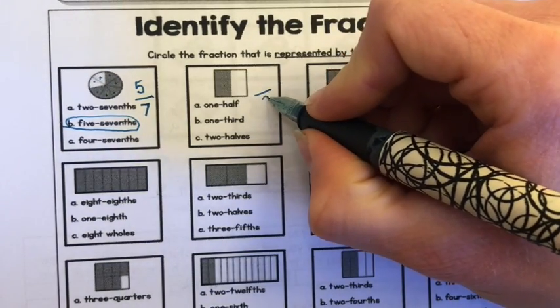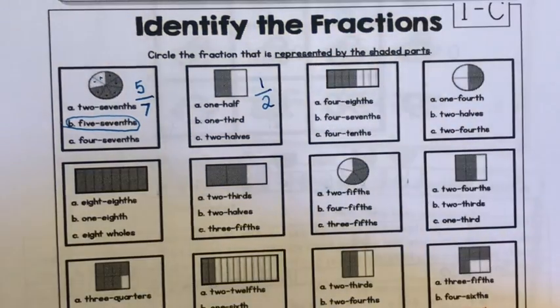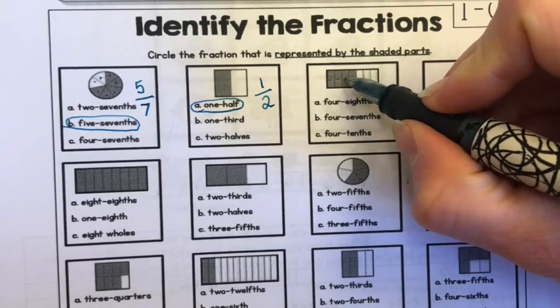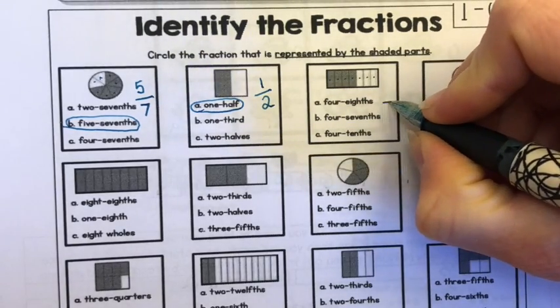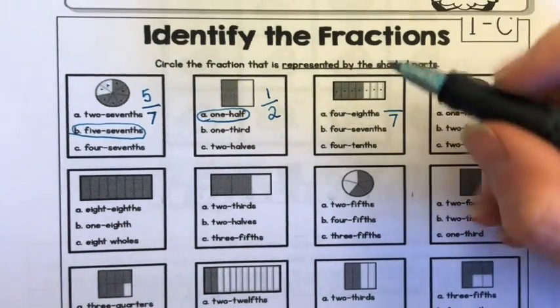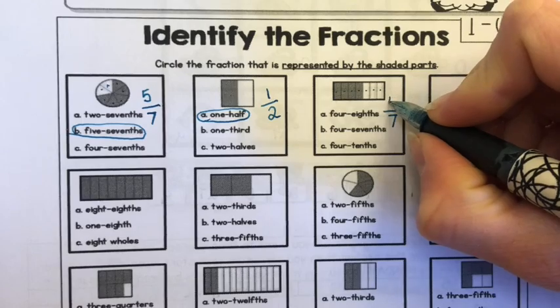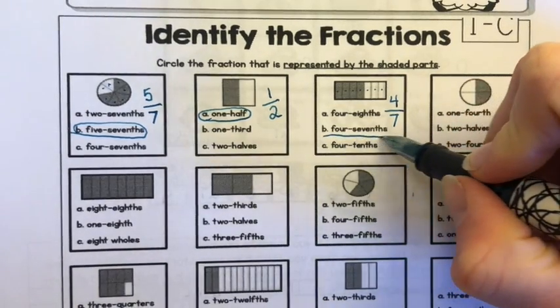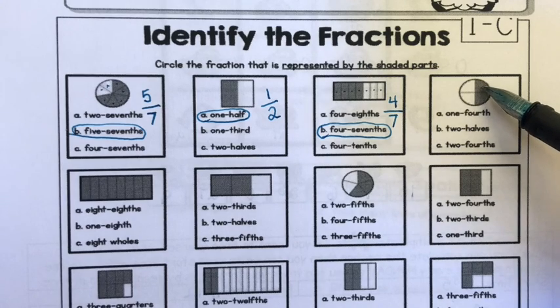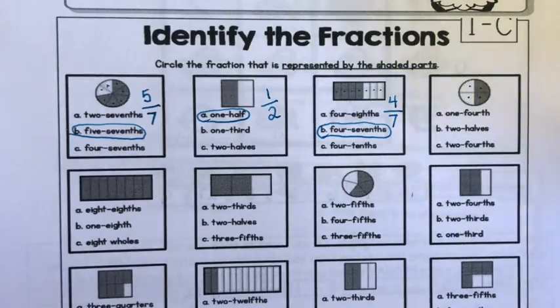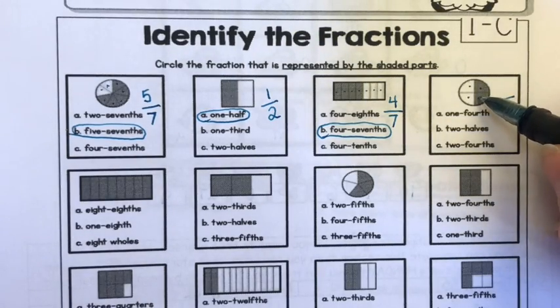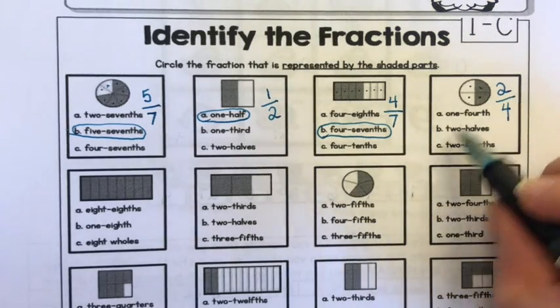Now let's look here. I have two pieces total, so my denominator is two and I have one piece shaded. So it's one half, one out of two. For the next one, I have one, two, three, four, five, six, seven pieces in total. My whole is broken up into seven pieces. Now I count the number of shaded pieces. I have one, two, three, four shaded pieces. So it's four sevenths and I would circle four sevenths. My next one, I have one, two, three, four pieces. So my whole is split into four pieces. That number goes on the bottom, that's my denominator. Now I count how many pieces are shaded. One, two - two pieces are shaded. So I have two fourths.